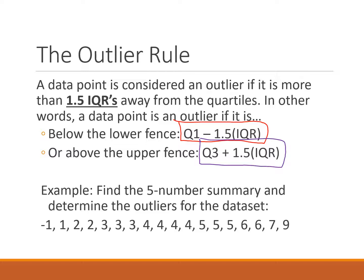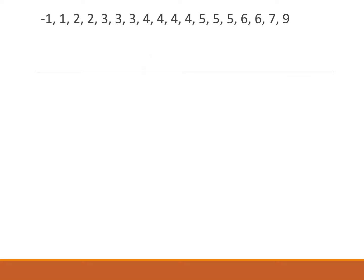We're going to find the five number summary and determine outliers for this data set at the bottom of this slide. Once we're in class I'm going to show you exactly how to get this five number summary on our calculator, but for now I'm just going to put it up on the slide here.